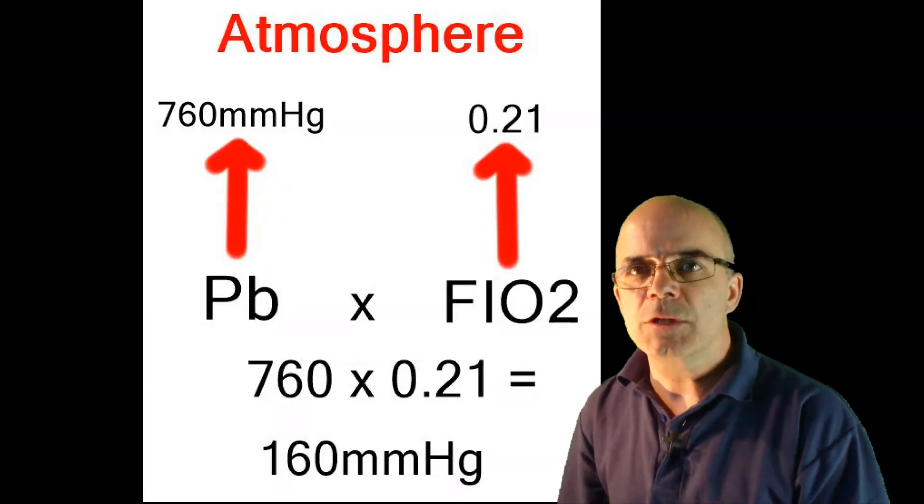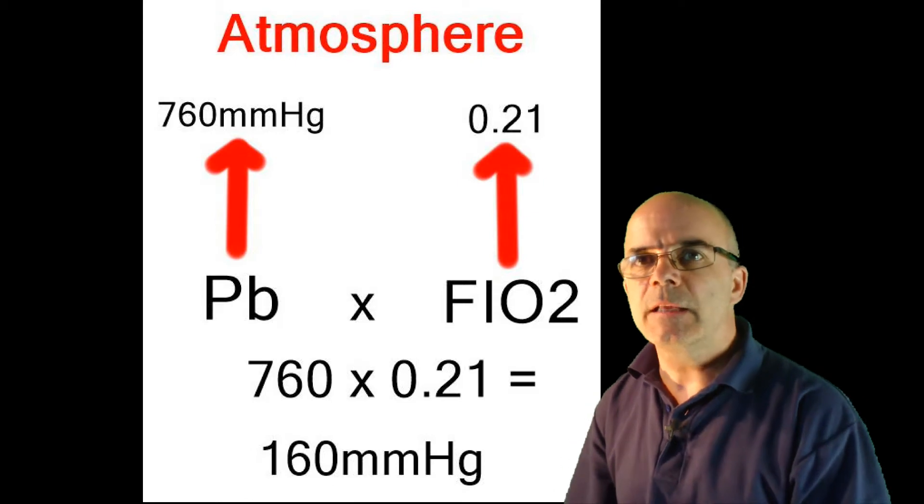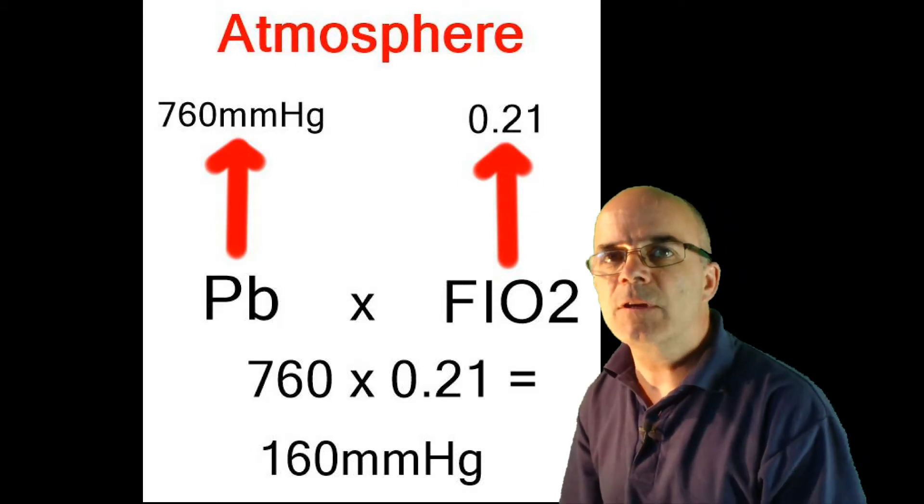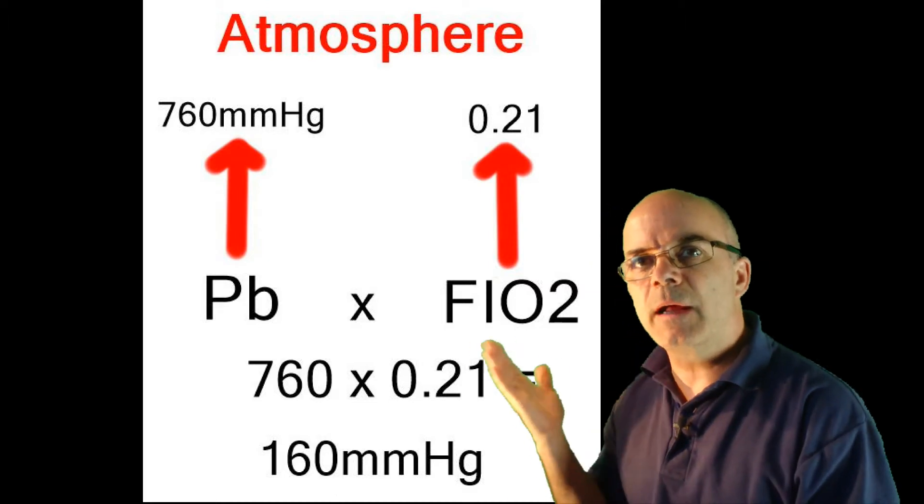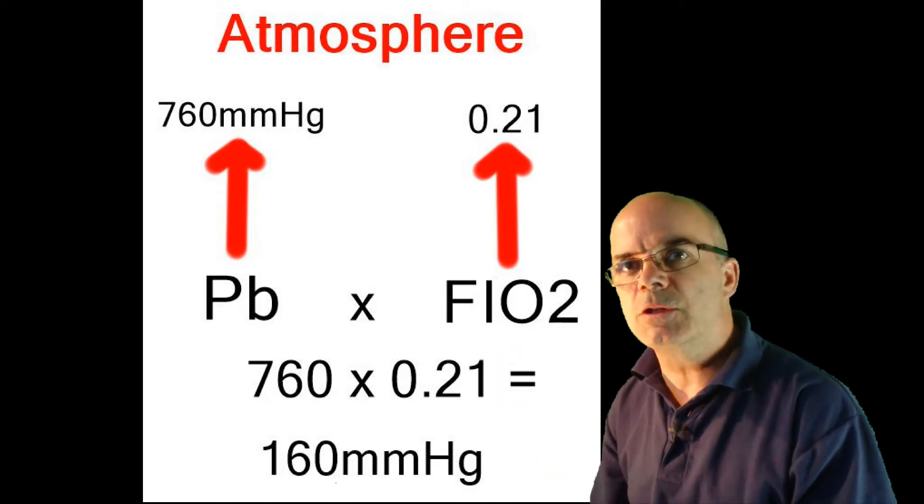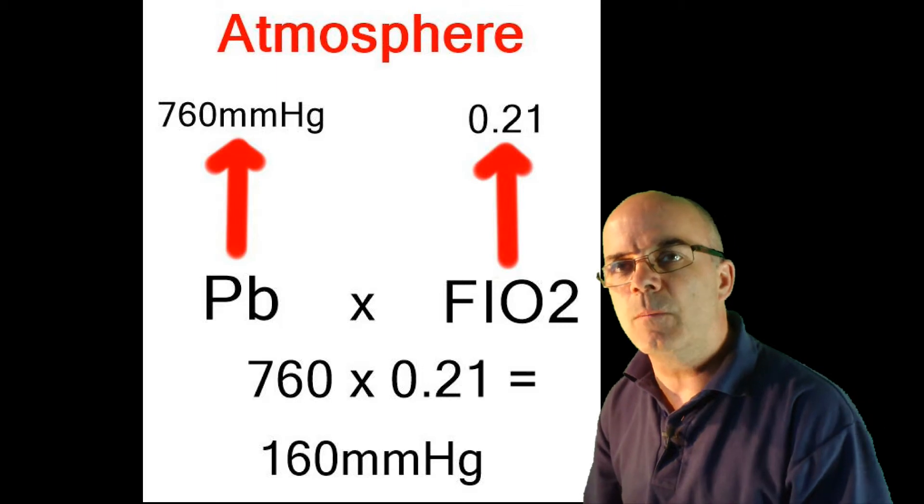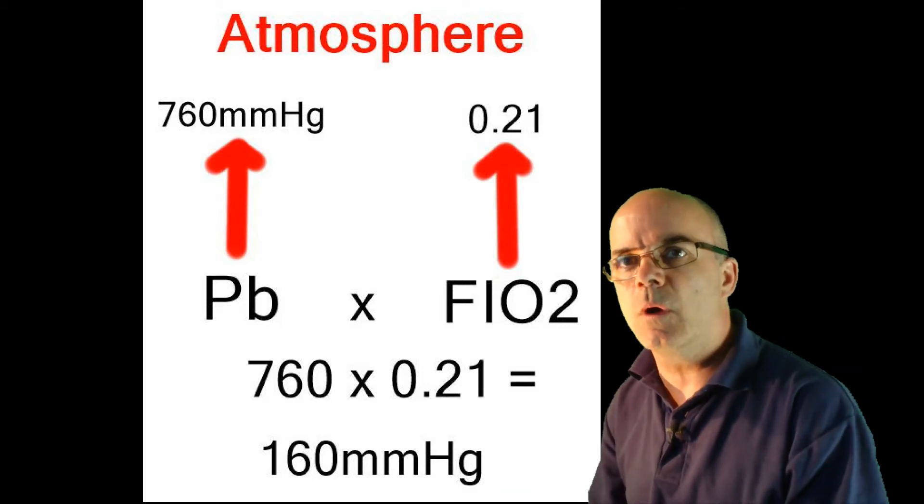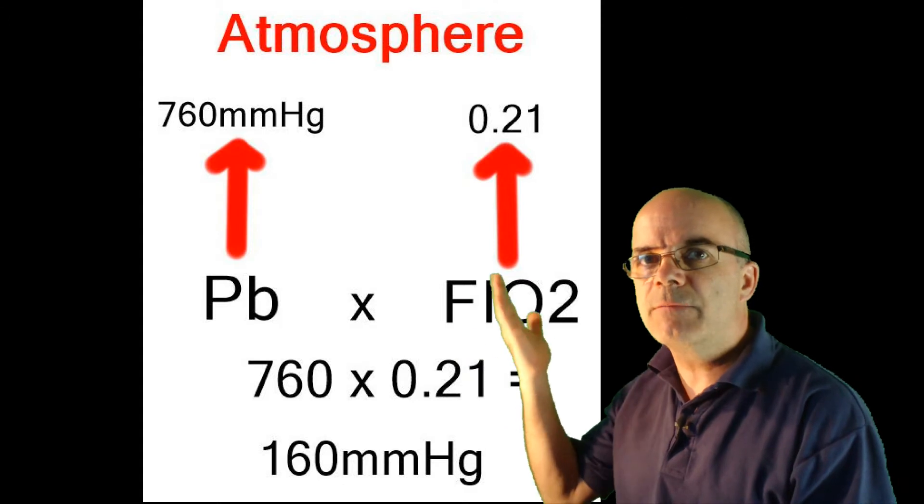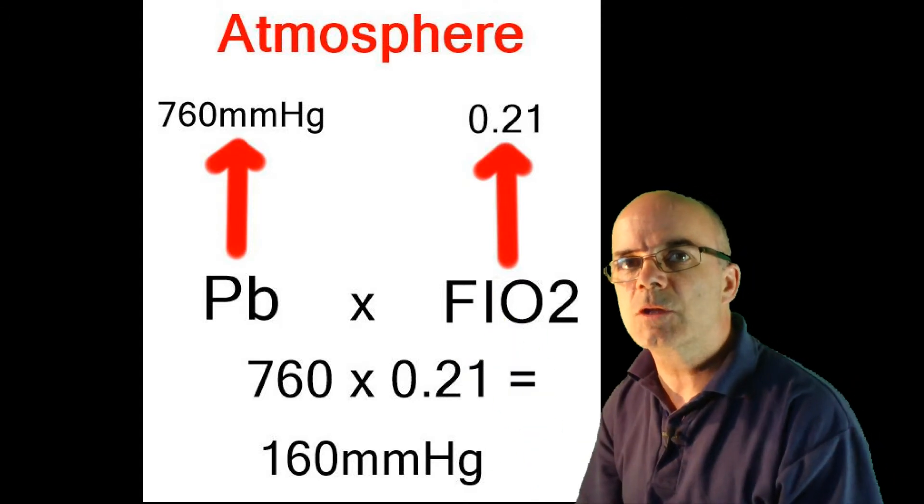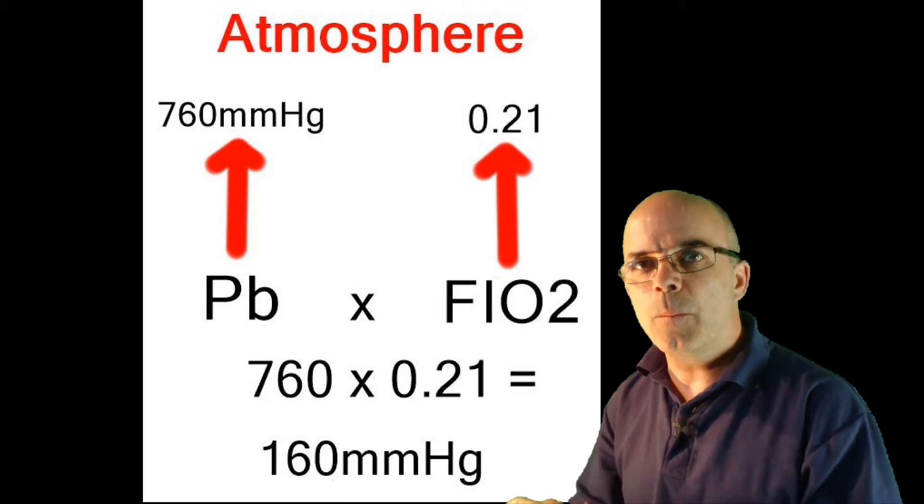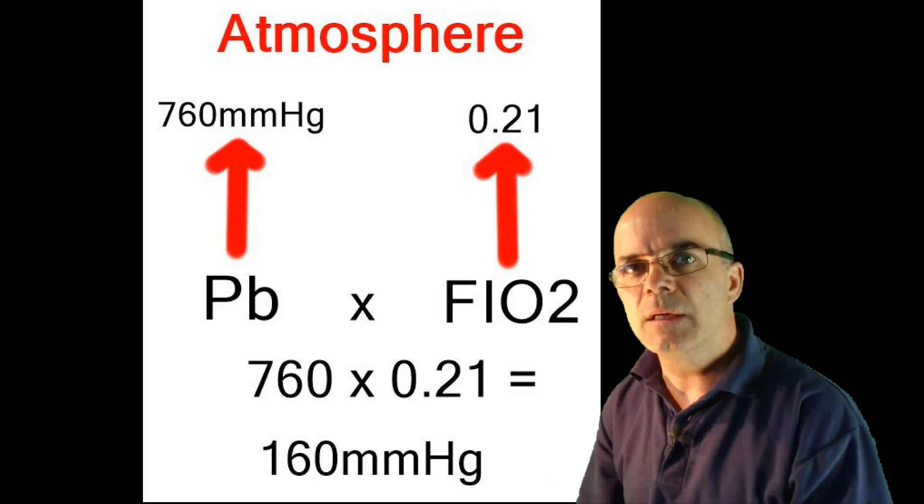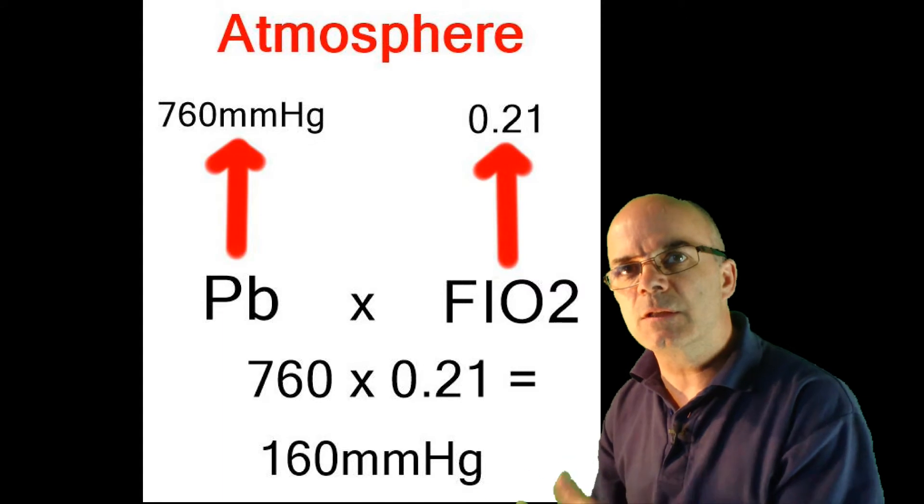To work out the pressure of oxygen in our atmosphere, take the barometric pressure, 760 mmHg at sea level, and multiply that by the concentration of oxygen in air, which is 21%, or 0.21. This means we multiply 760 by 0.21, so the partial pressure of oxygen, or PO2 in the atmosphere, is 160 mmHg.